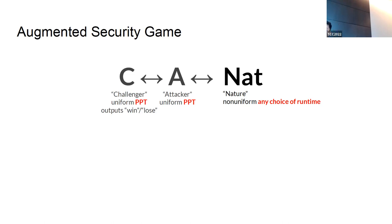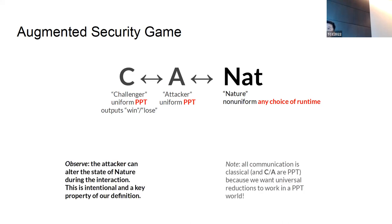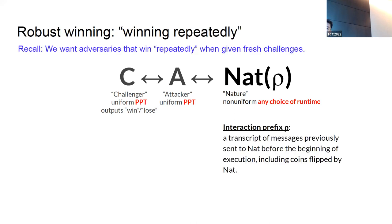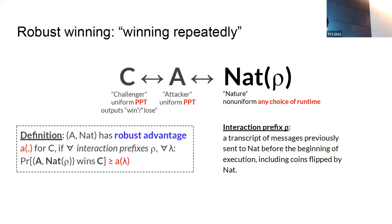We want a next-door neighbor who wins repeatedly on fresh challenges. We define robust winning: an interaction prefix is a transcript of messages and coins nature previously saw. We say the augmented adversary (A, Nat) has robust advantage α if for all interaction prefixes — no matter what happened in the past — the probability of winning a new instance of the security game on fresh coins is at least α. Robust winning seems a very natural notion and is what we examine in our paper.